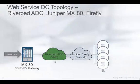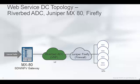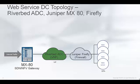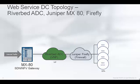Logically, this is the topology we're using. There are multiple web server instances running on a private network inside a data center. HTTP request traffic will come in from the internet through a gateway in the data center. The Riverbed ADC will provide translation between a single public IP address and multiple private IP addresses for the web servers, enabling the ADC to load balance HTTP requests across multiple web servers.